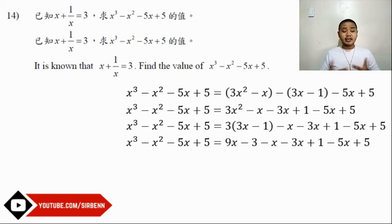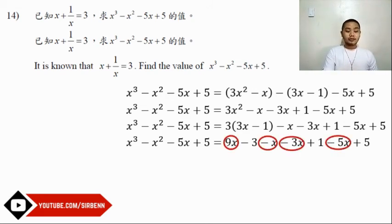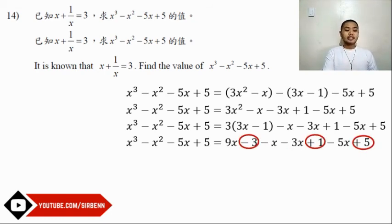Now let's simplify by combining similar terms. Combining all the terms with the variable x: 9x - x - 3x - 5x equals 0. Then combining all the constants: -3 + 1 + 5 equals 3.